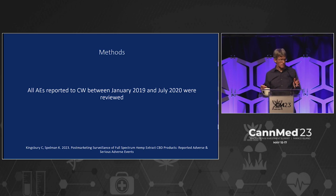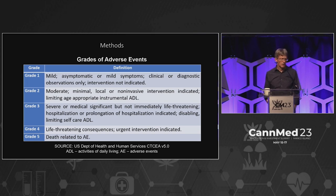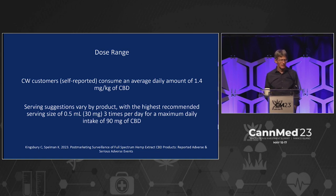Now this is a period of 18 months, which also gives you an idea of Charlotte's Web sales. This is what was used to grade the adverse events — this is not cannabinoid-specific, this is just what is used in the industry. Grade one is considered very mild, grade three is more severe, grade five — you died. The dose range: Charlotte's Web has determined about 1.4 milligrams per kilogram of CBD average daily consumption, which seems on the low end. Serving suggestions vary by product with the highest recommended serving size of about 30 milligrams three times a day, so up to 90 milligrams.